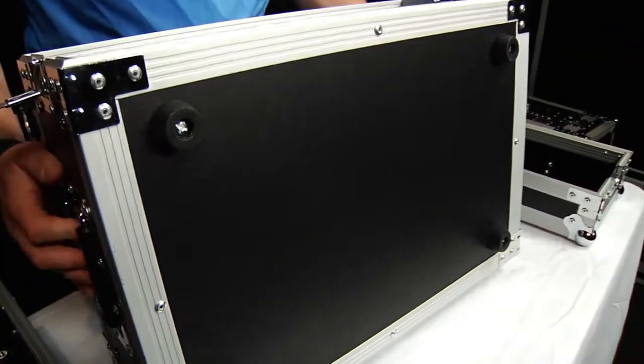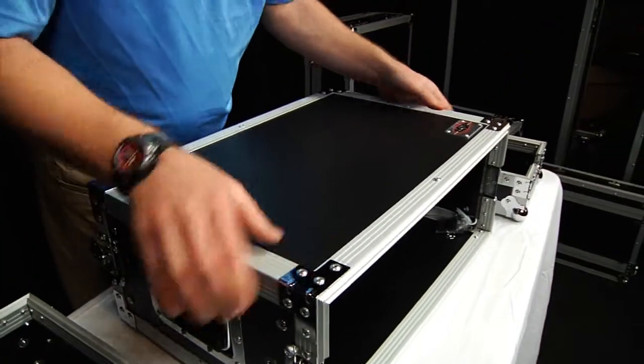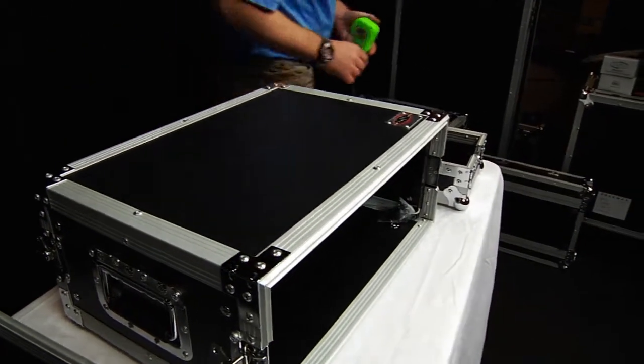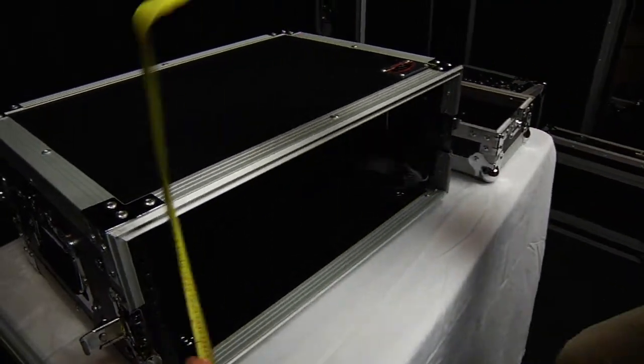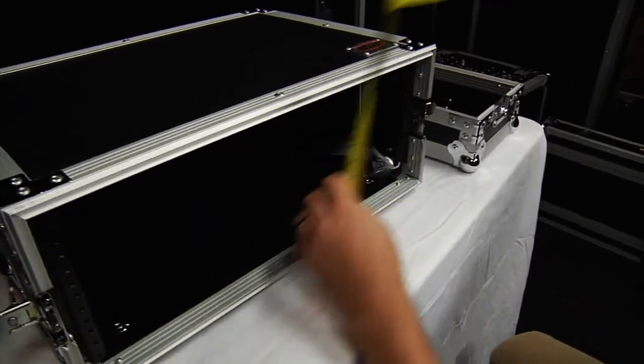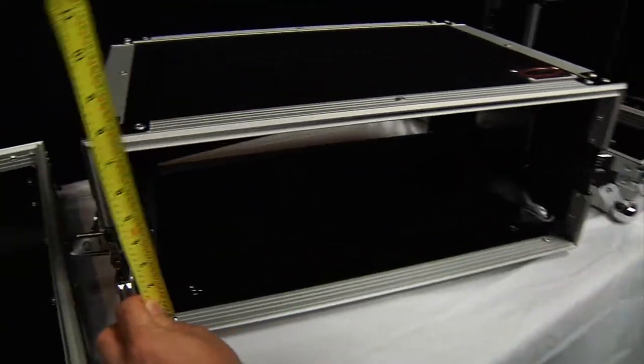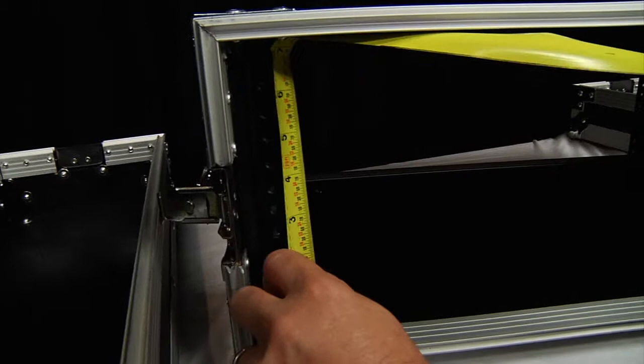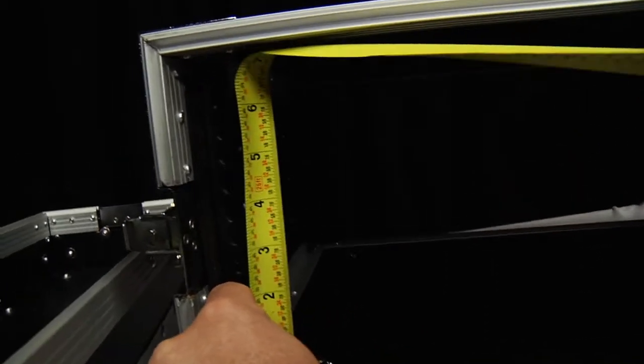You've got these steel rack rails in the front. Now this is what I said is a four space rack case which means you've got a set of, let's see how we can get this here, looks like about seven inches of rack rail there.